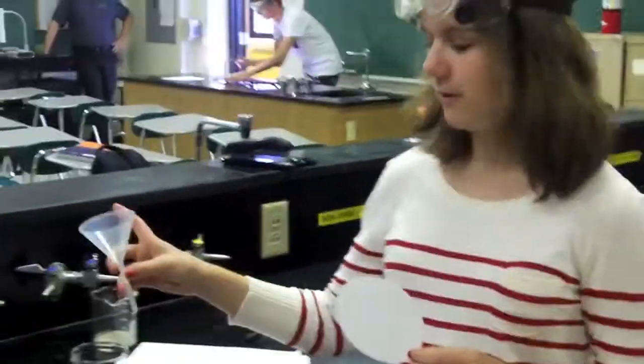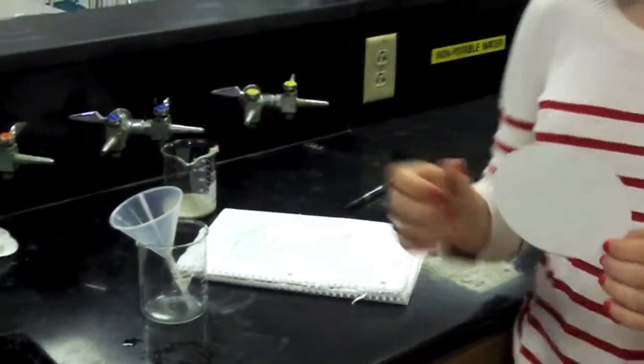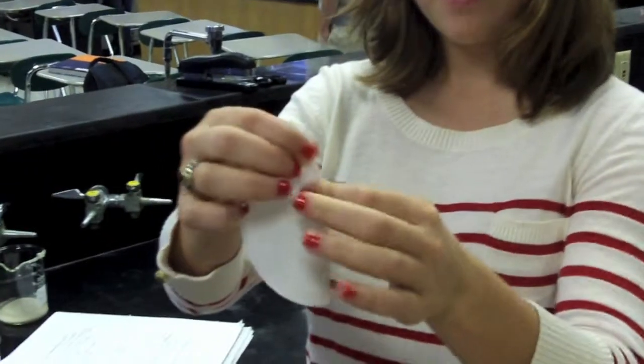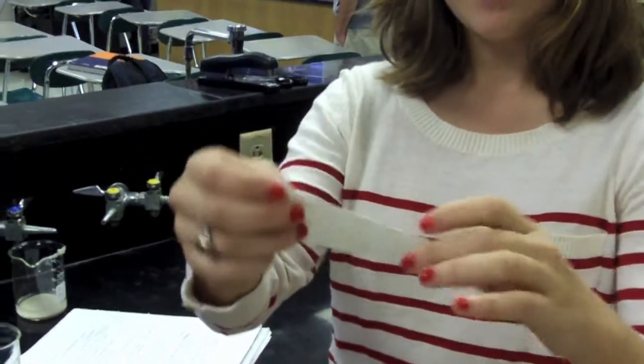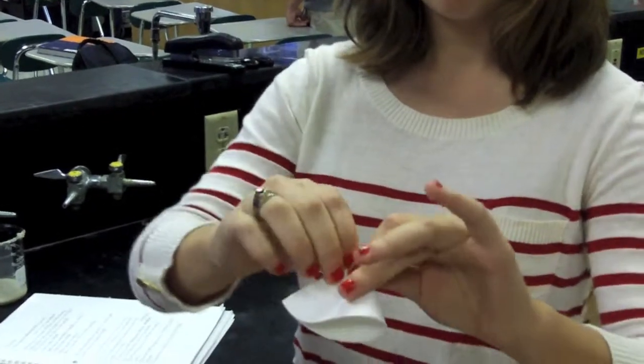The filter paper is a circle, so you need to fold it so that it fits into this funnel, which then fits into this beaker. Fold it in half once, making a half circle, making sure that you crease it, and then fold it in half one more time.